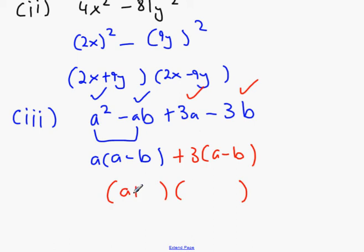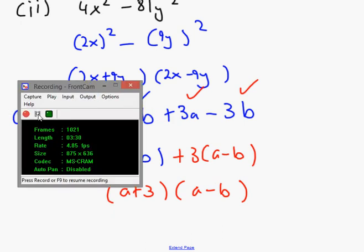What's the next step after that? a plus 3 times a minus b. There you go. If you really want you can multiply that back out again, it should turn into the original.